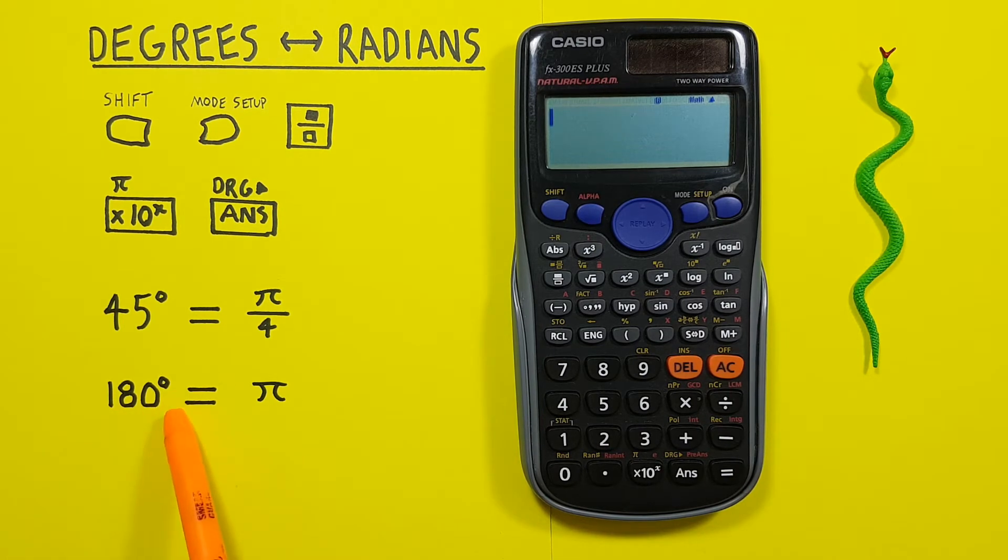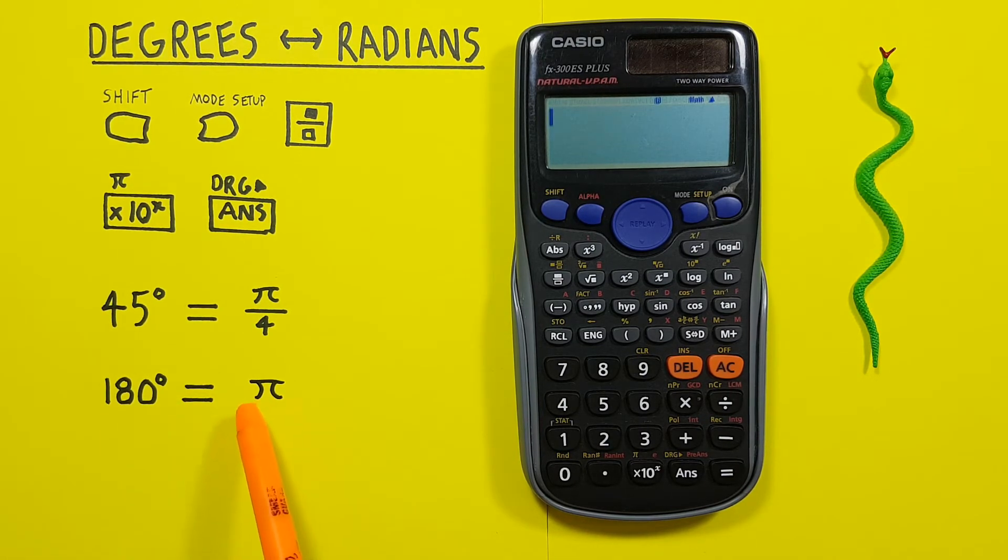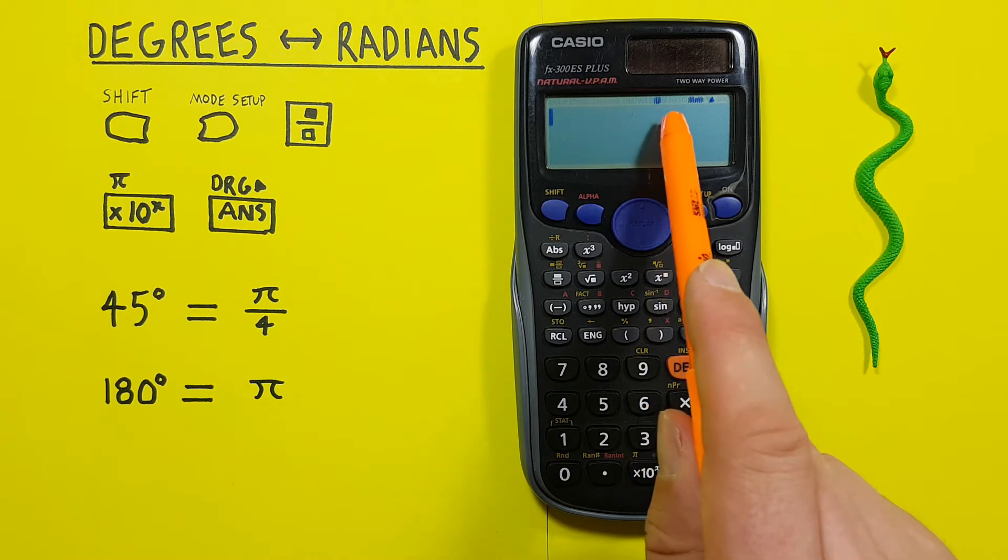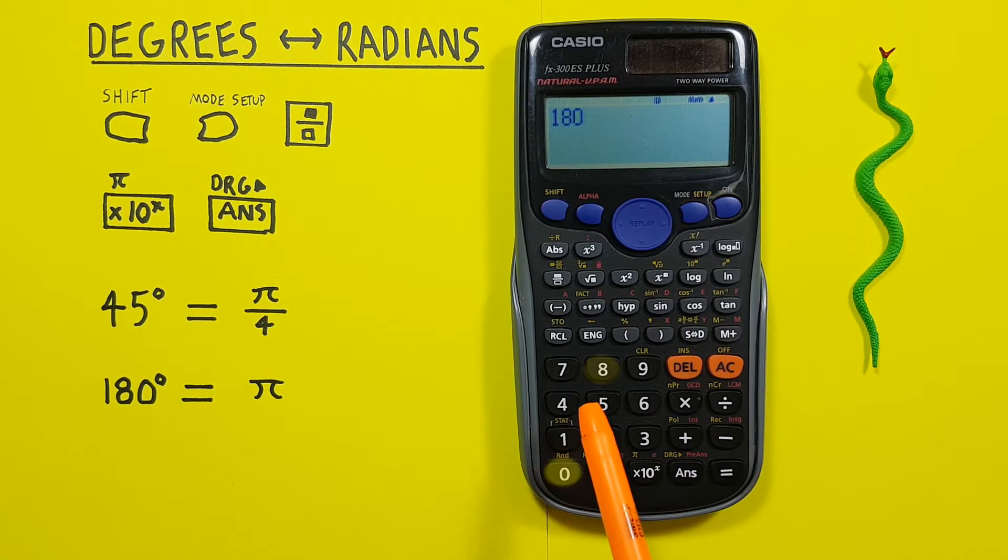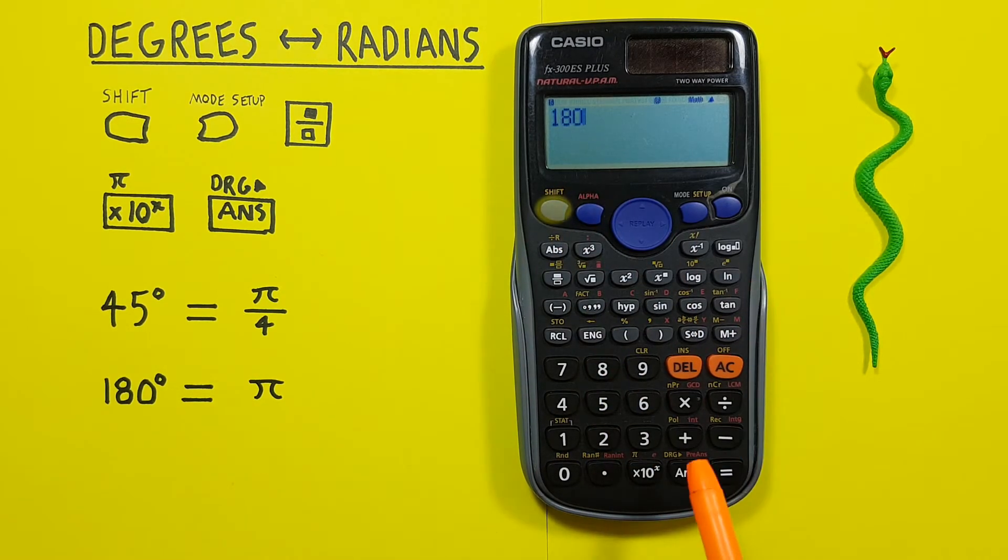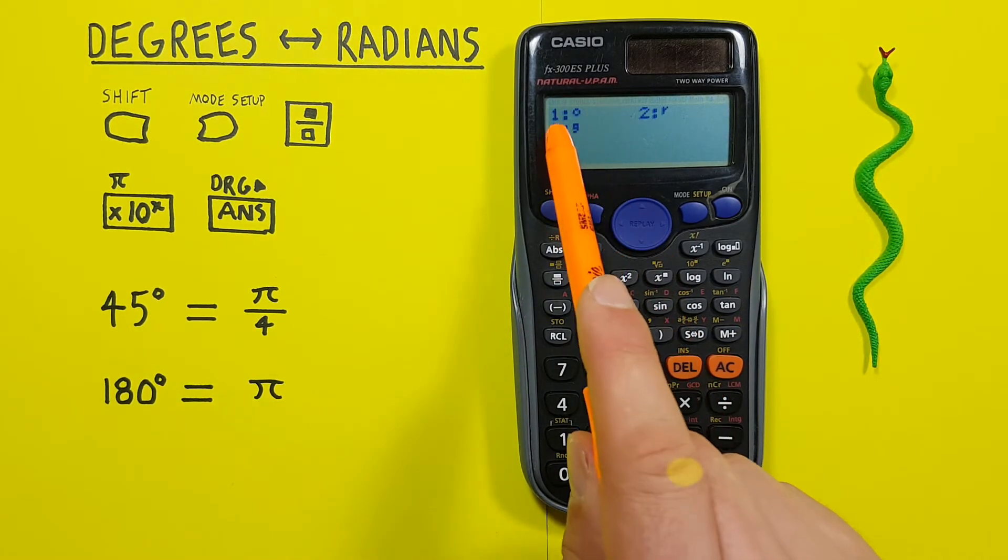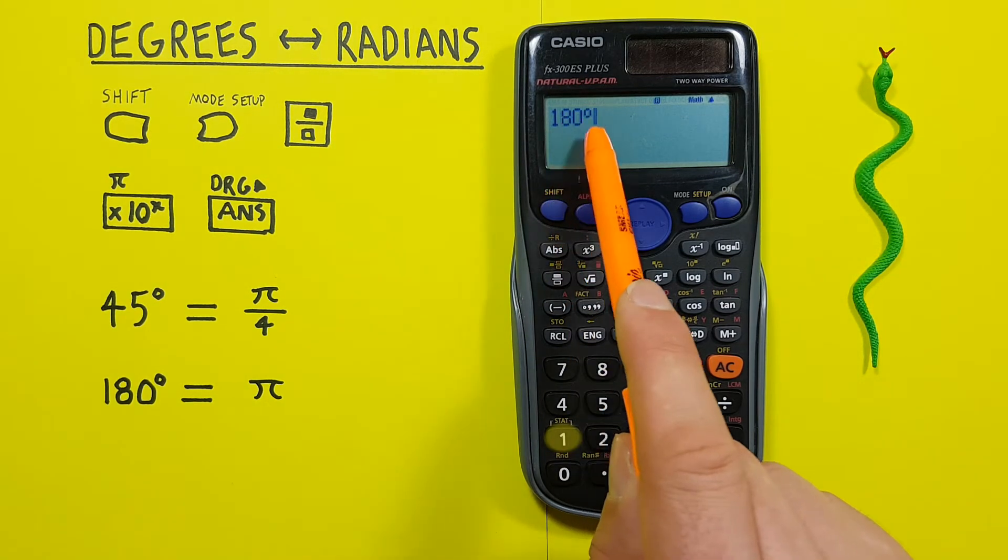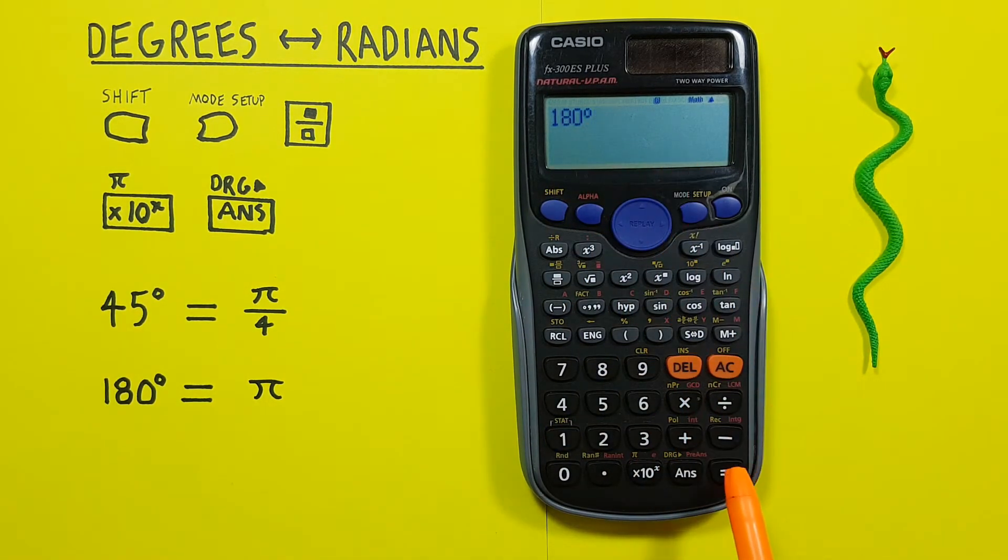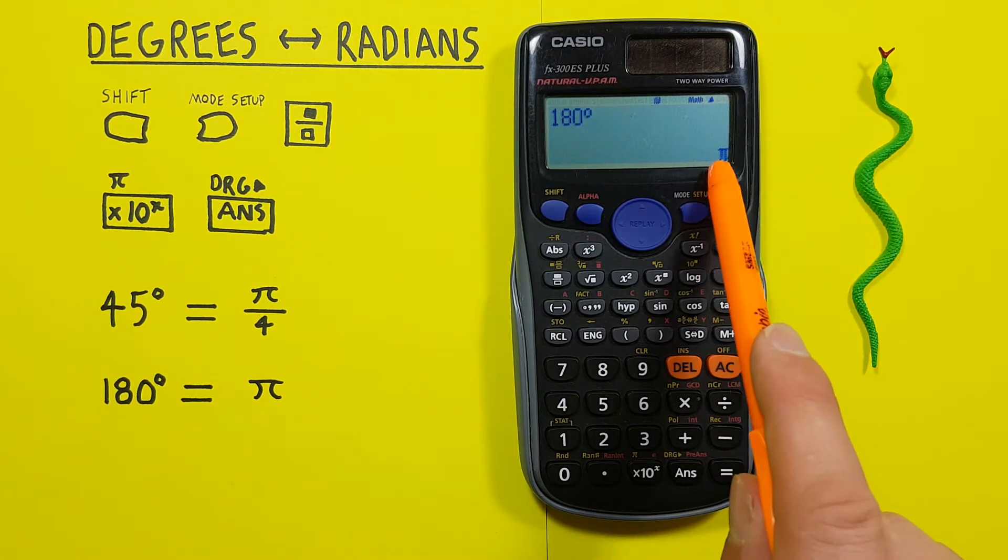Let's try 180 degrees into radians. Since we're already set to radians mode, we can just enter our degrees, and then Shift and tell our calculator we want degrees. There we go, 180 degrees into radians. Press equals, and we see we get a result of pi.